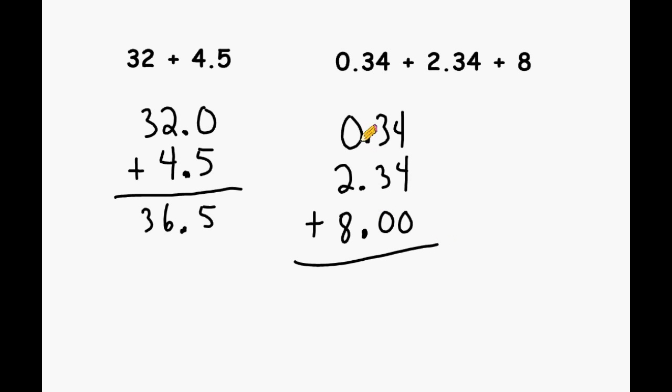We may start by dropping our decimal straight down. In the hundredths column we have a total of 8 hundredths. In the tenths column we have a total of 6 tenths. And in the ones column we have a total of 10. So all three values added together yield a sum of 10 and 68 hundredths.